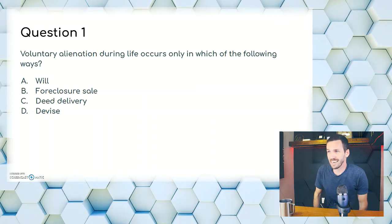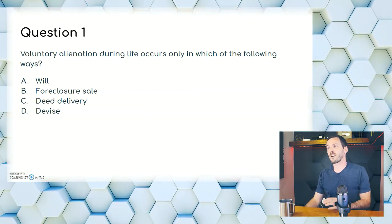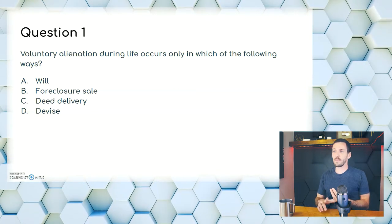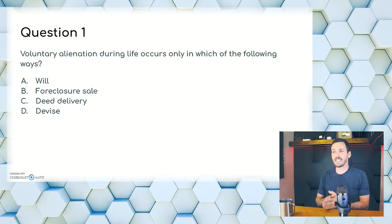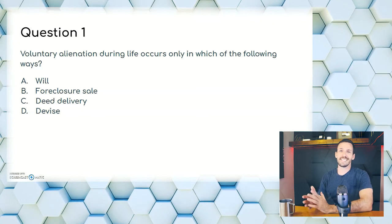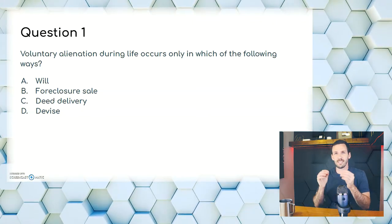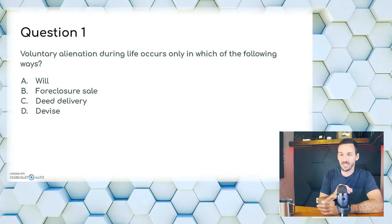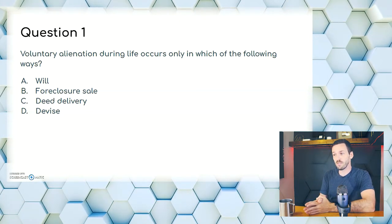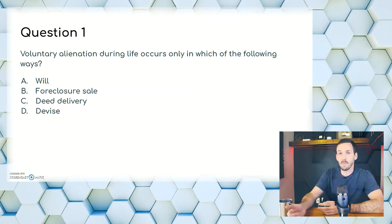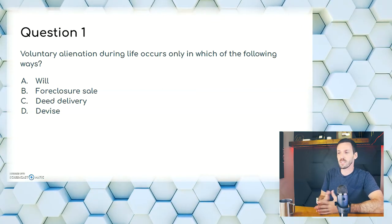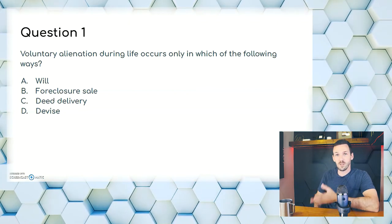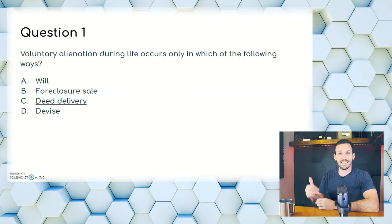Question one: voluntary alienation during life occurs only in which of the following ways? A, a will; B, foreclosure sale; C, deed delivery; or D, devise. The keyword here is 'voluntary.' A will means death — that's not voluntary. Foreclosure isn't voluntary; that's basically the bank taking the house away from you almost by force. Devise deals with a will and death again. So the answer is C, deed delivery.